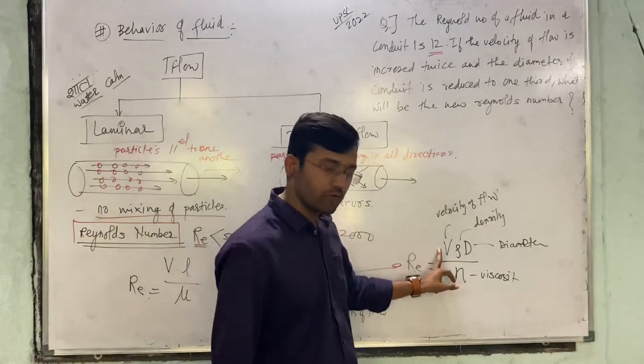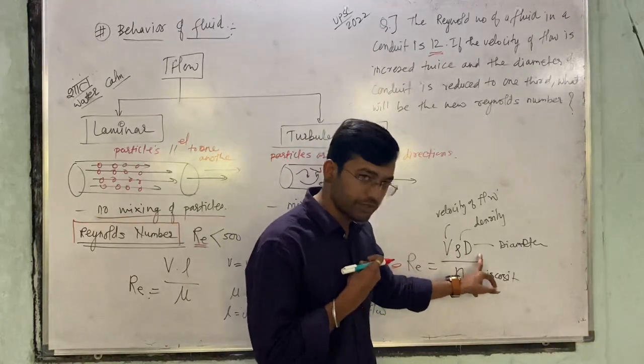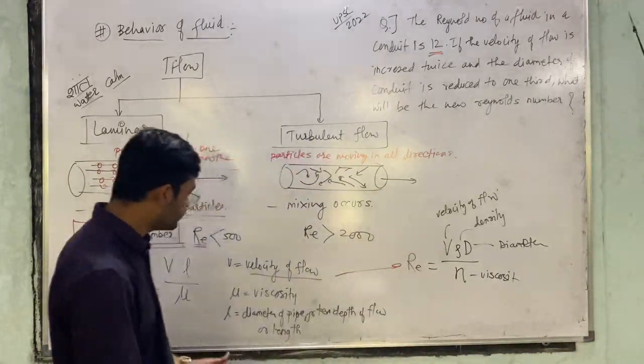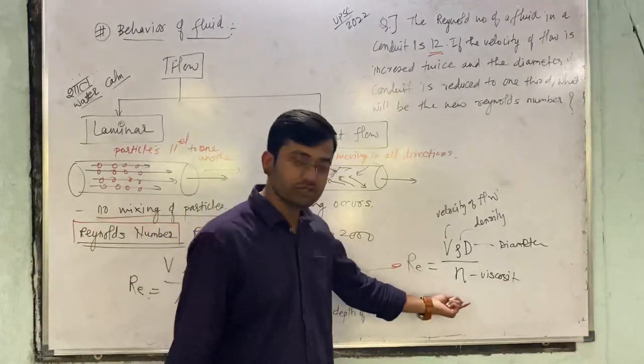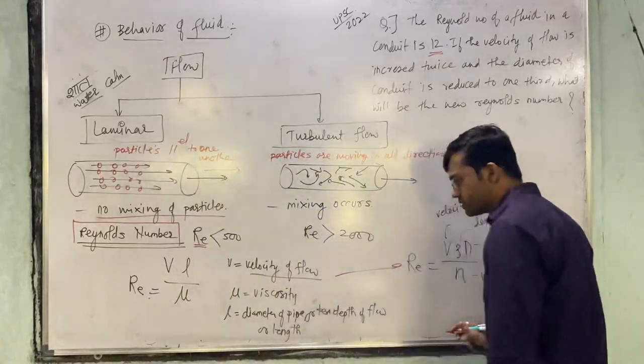We have one more formula of Reynolds number: velocity times density times diameter divided by viscosity. D is the diameter and eta is your viscosity. In some books viscosity is denoted by eta, in some by mu. Don't be confused.